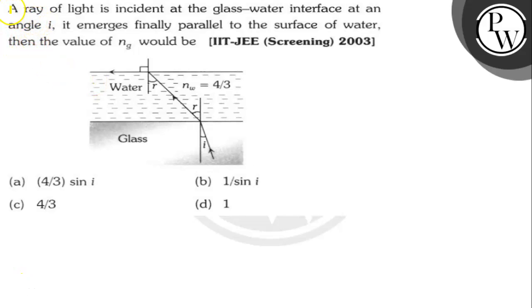Hello, let's read the question. The question says here, a ray of light is incident at the glass-water interface at an angle I. It emerges finally parallel to the surface of water. Then the value of μG would be what?